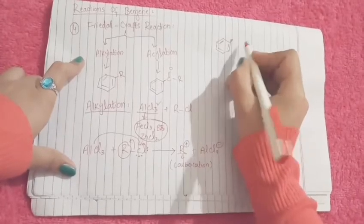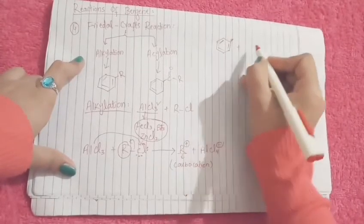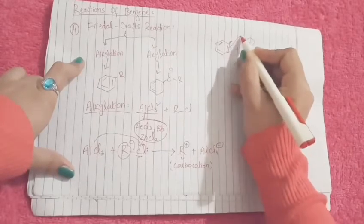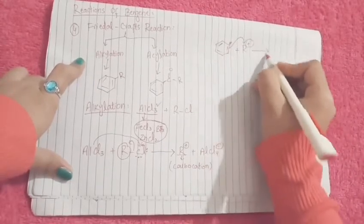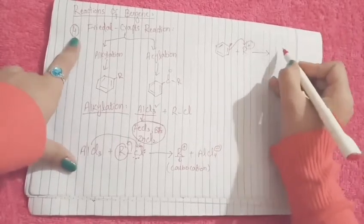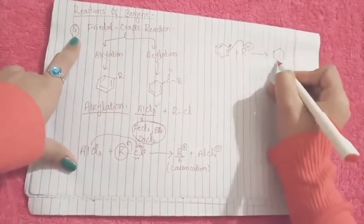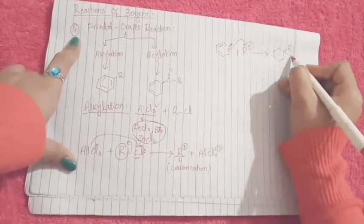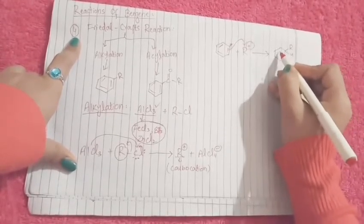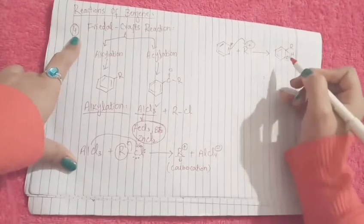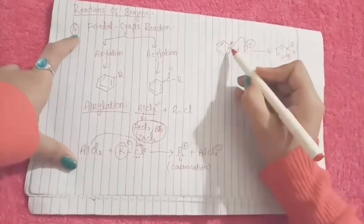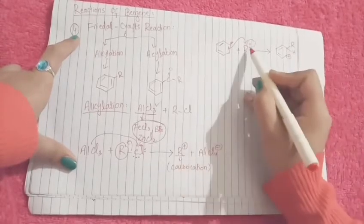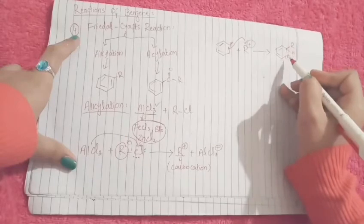Benzene will react on the carbocation as a nucleophile, and an arenium ion will be produced here. Now you can see that from this bond, benzene has reacted on the carbocation, so this is attached here and the positive charge is here.